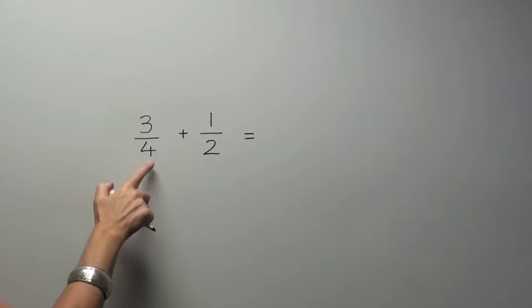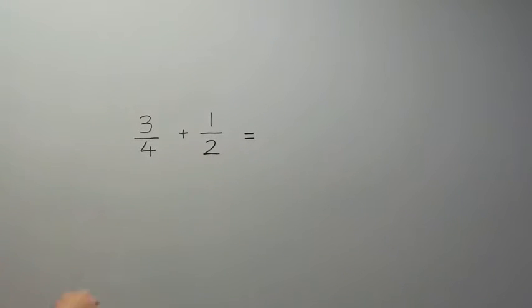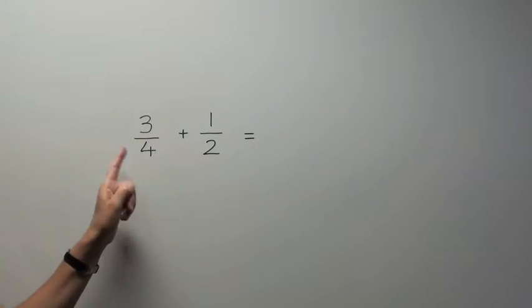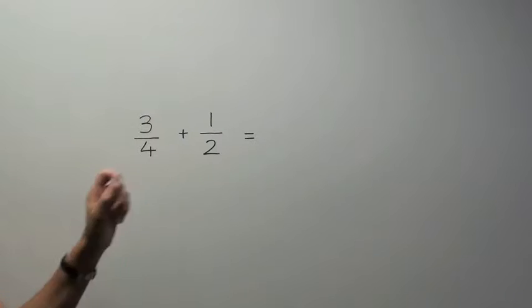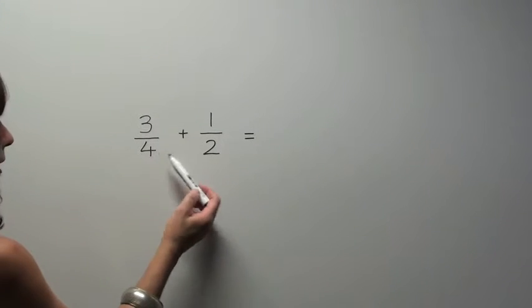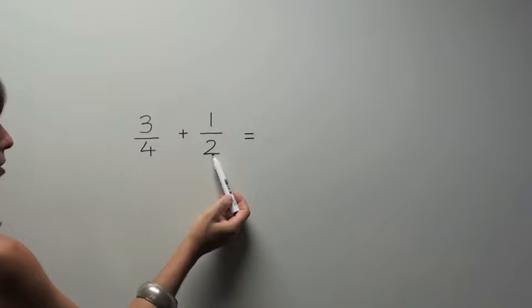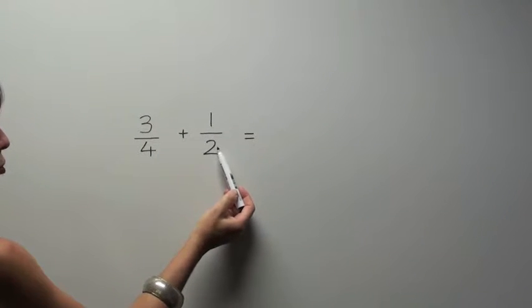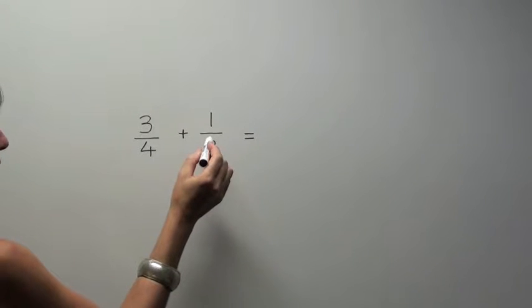Now if we have denominators that are different, we can't add them. We need to make the denominators the same. Now remember the rule: Whatever I do to the denominator, I also do to the numerator. So I can change these denominators and make them the same. Here I have a 4 and here I have a 2. So I can change the 2 and make it into a 4 simply by multiplying the 2 by 2.